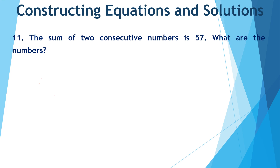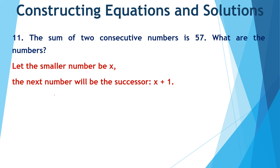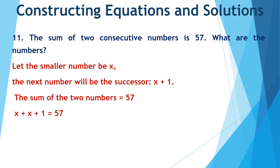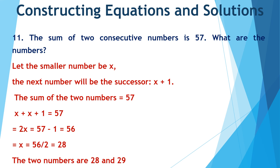The sum of two consecutive numbers is 57. What are the numbers? Let the smaller number be x, so the next number (its successor) will be x plus 1. The sum of the two numbers is 57, so x plus (x plus 1) equals 57. On solving, we get 2x equal to 56 and x equal to 28. So the smaller number is 28 and the bigger number is 29.